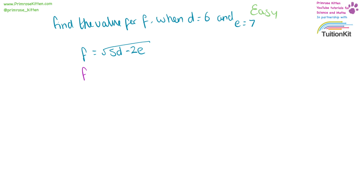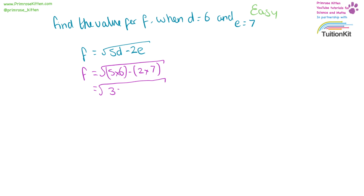Find the value for f when d equals 6 and e equals 7. f equals the square root of 5d minus 2e — that's 5 times 6, which is 30, minus 2 times 7, which is 14. That is equal to the square root of 16. The square root of 16 is 4.